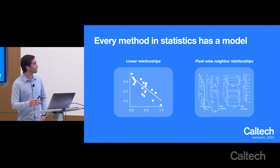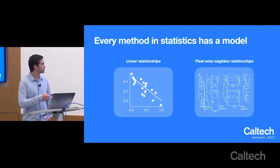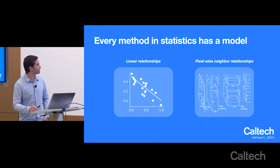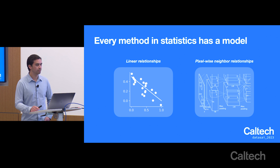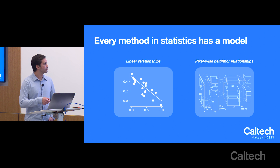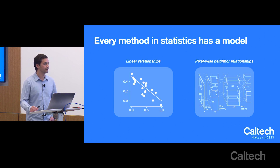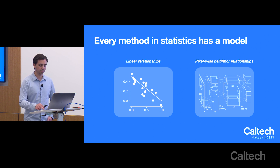Every method in statistics has an implicit model of the world. For example, simple methods such as linear regression model the world as a hyperplane, whereas more complicated methods such as convolutional neural networks model relationships in data through pixelized relationships that increase in a hierarchical manner.